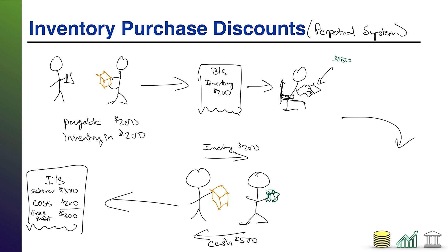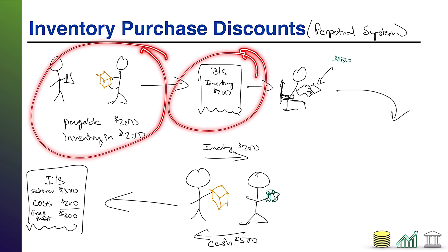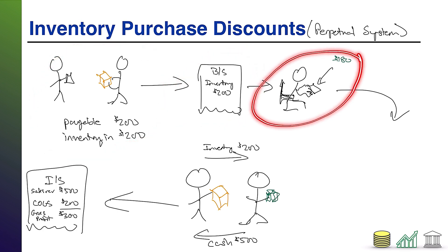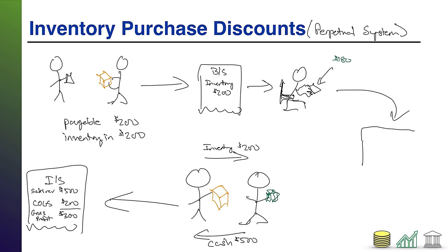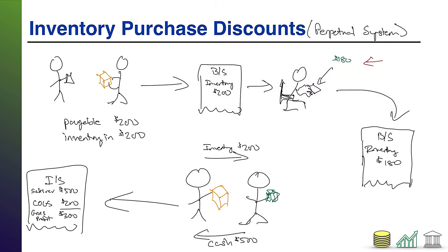So we're paying early and saving $20 — we only pay the supplier $180. Here's what tends to confuse students: our balance sheet already has inventory of $200 on it from when we bought the inventory, but we're only spending $180 because of that $20 early-payment discount. What that ends up doing is forcing us to credit our inventory account and bring the balance of that inventory down to $180.